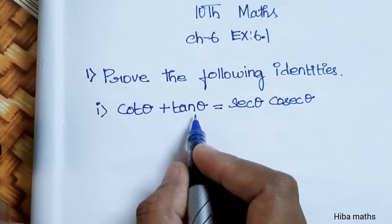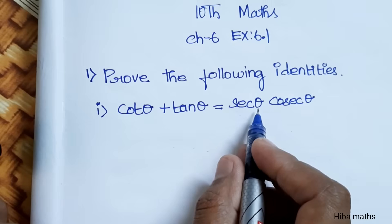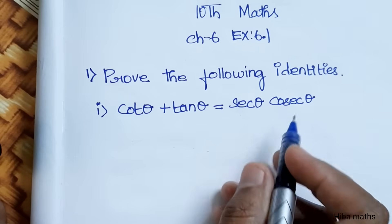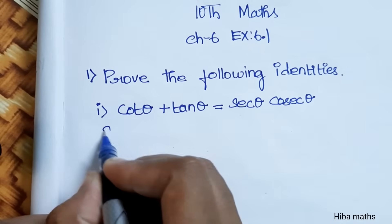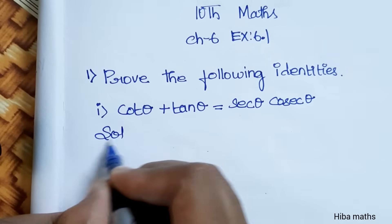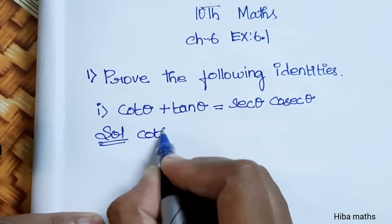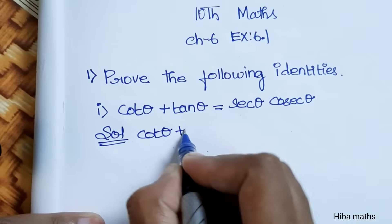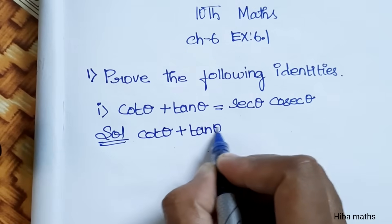First question: prove the following identities. The first question is cotθ + tanθ = secθ · cosecθ. Let's take the left-hand side: cotθ + tanθ.